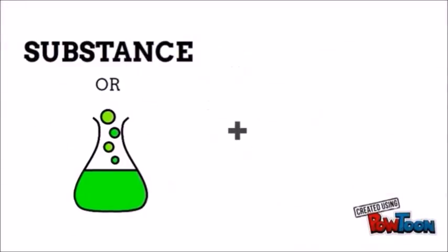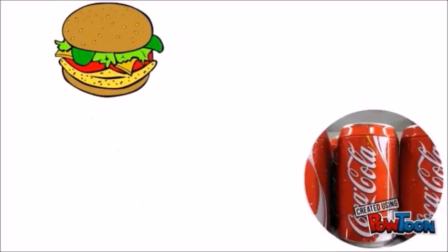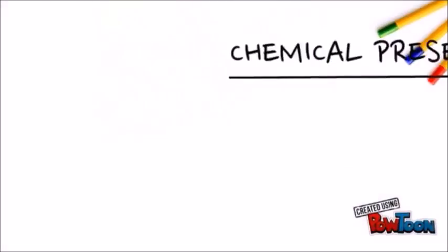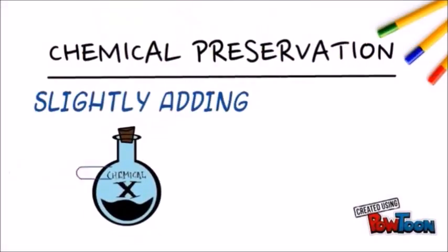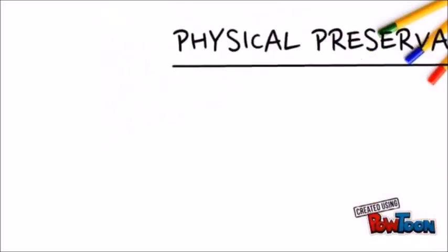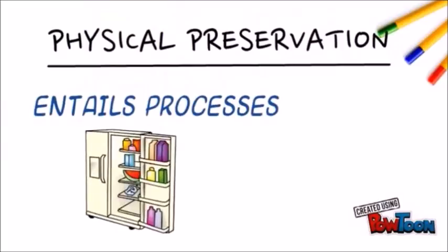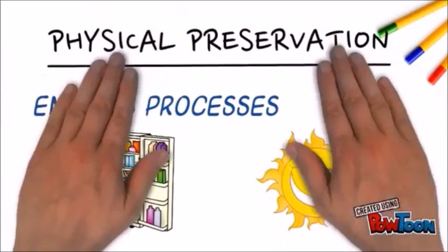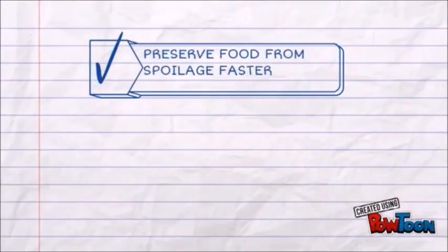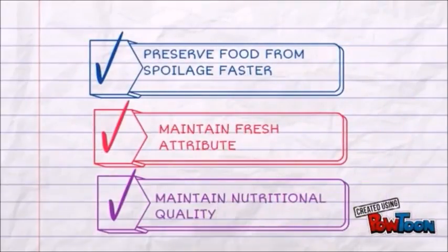A preservative is a substance that is added to products such as food, beverage, pharmaceutical drug, cosmetic, and so on. Preservatives are implemented in two modes: physical and chemical. Chemical preservation involves adding a chemical compound to the product, while physical preservation involves internal processes such as refrigeration or drying. Preservatives are mostly used in food — to preserve food from spoilage and maintain the fresh attributes and nutritional quality.